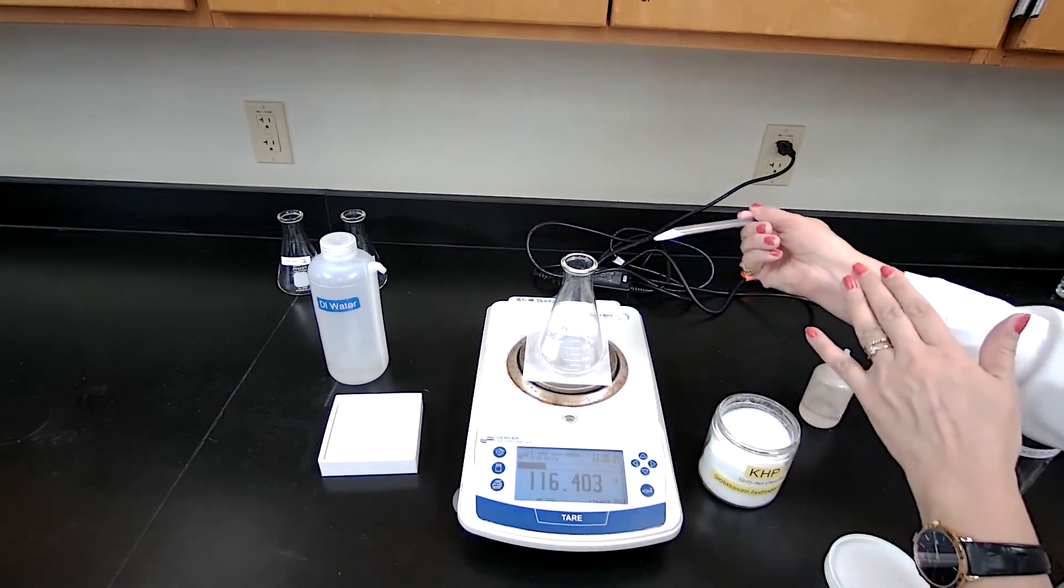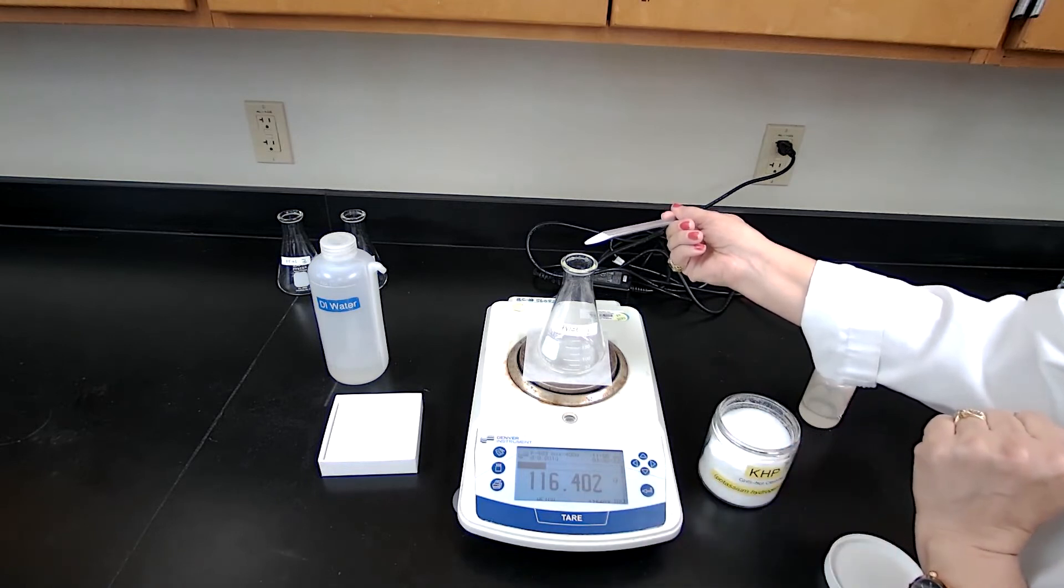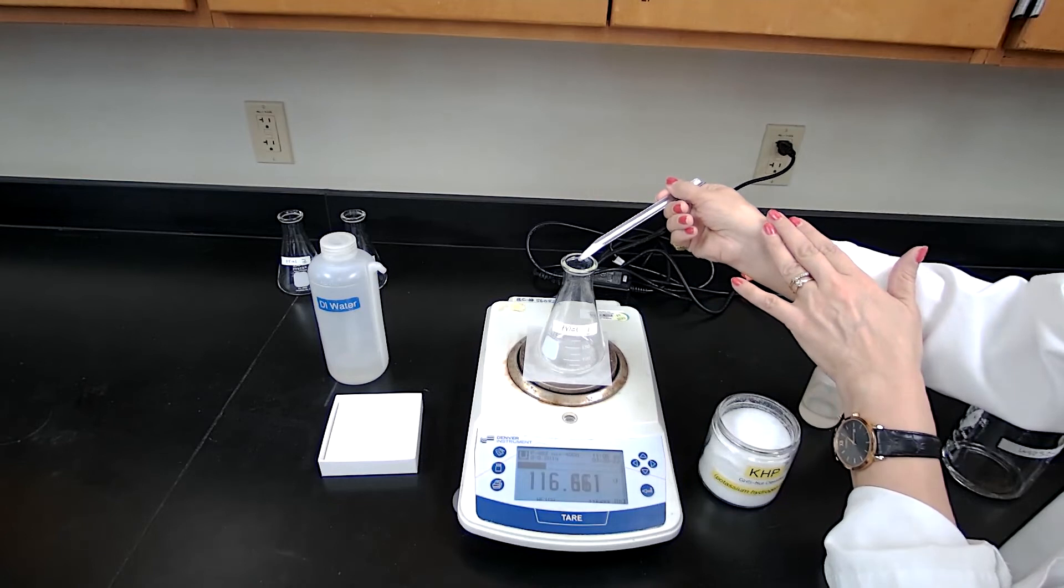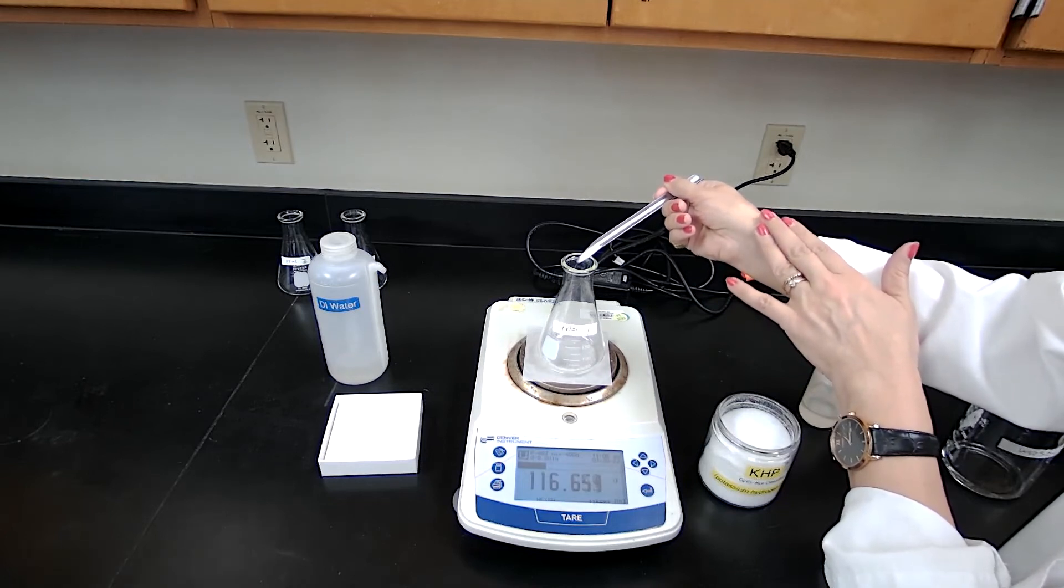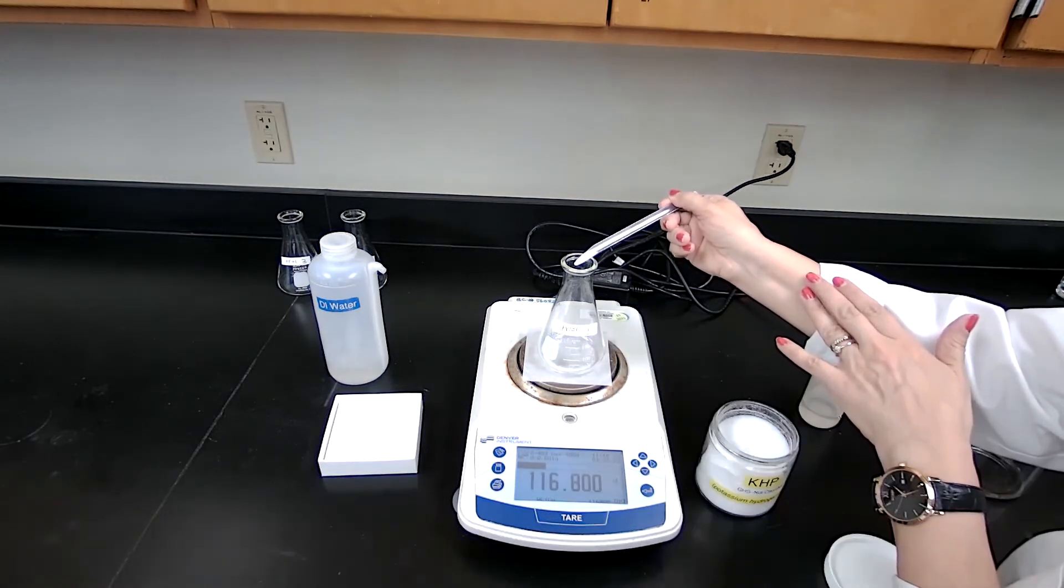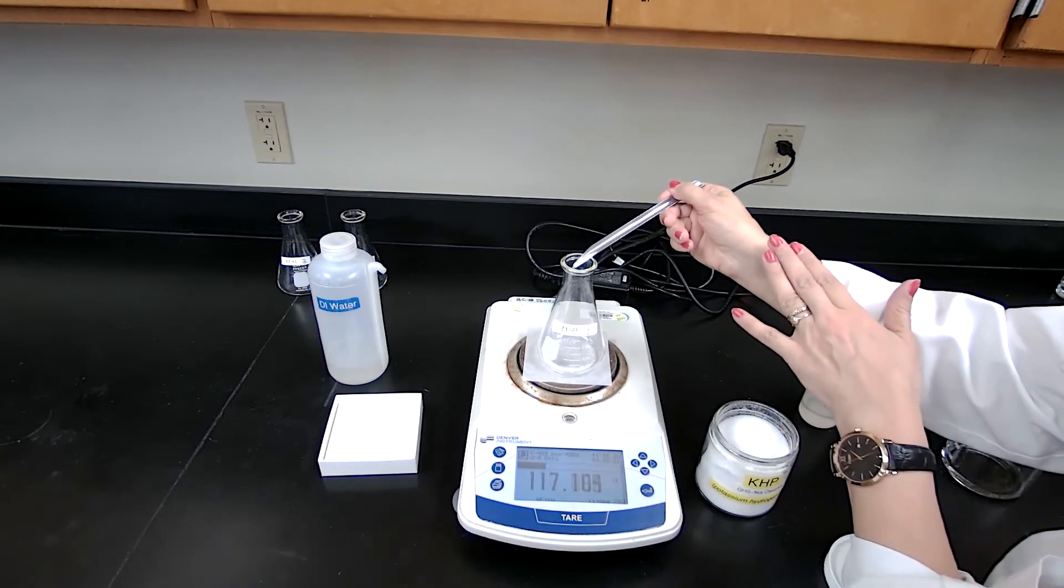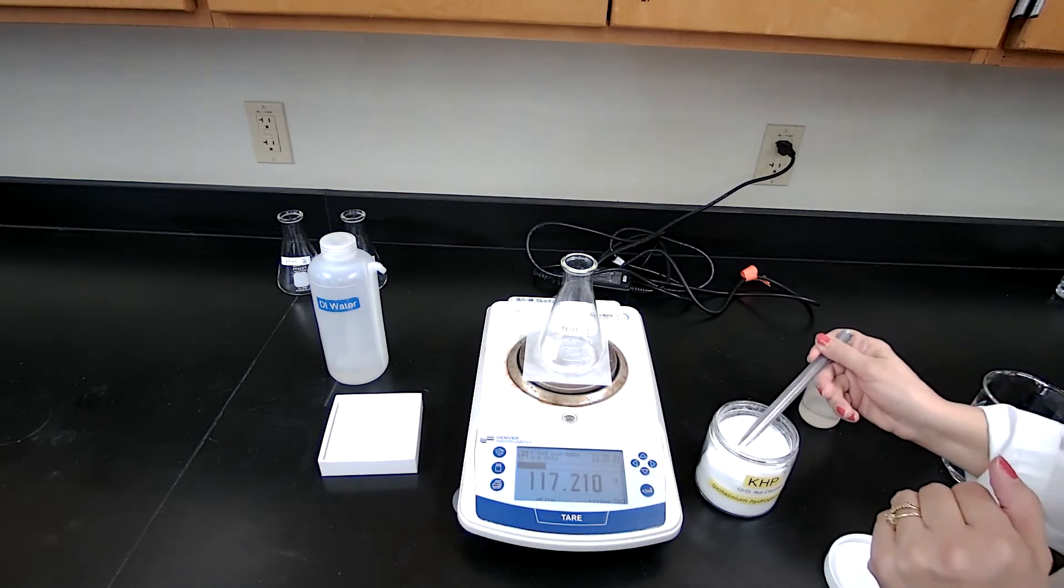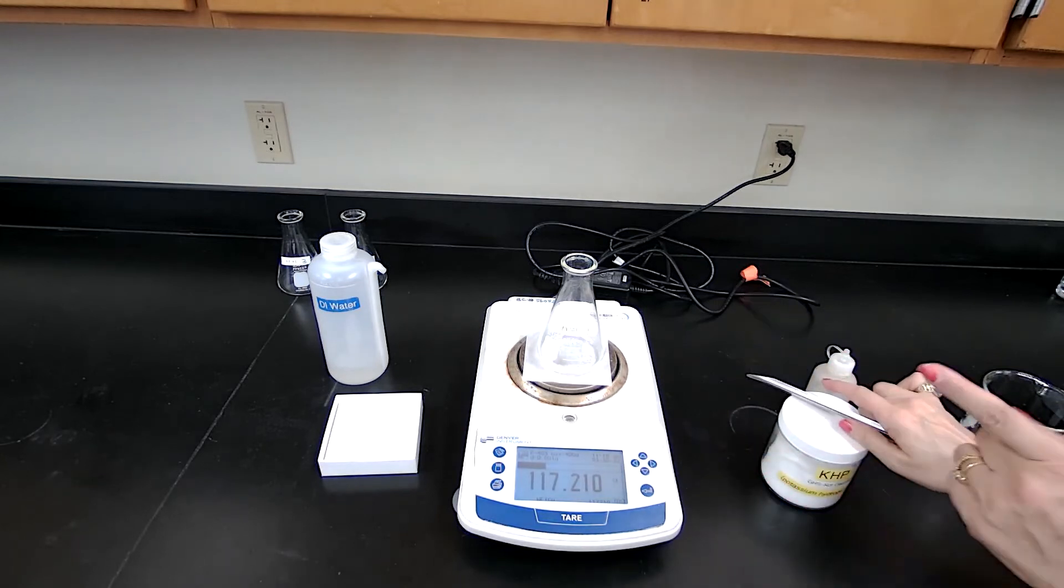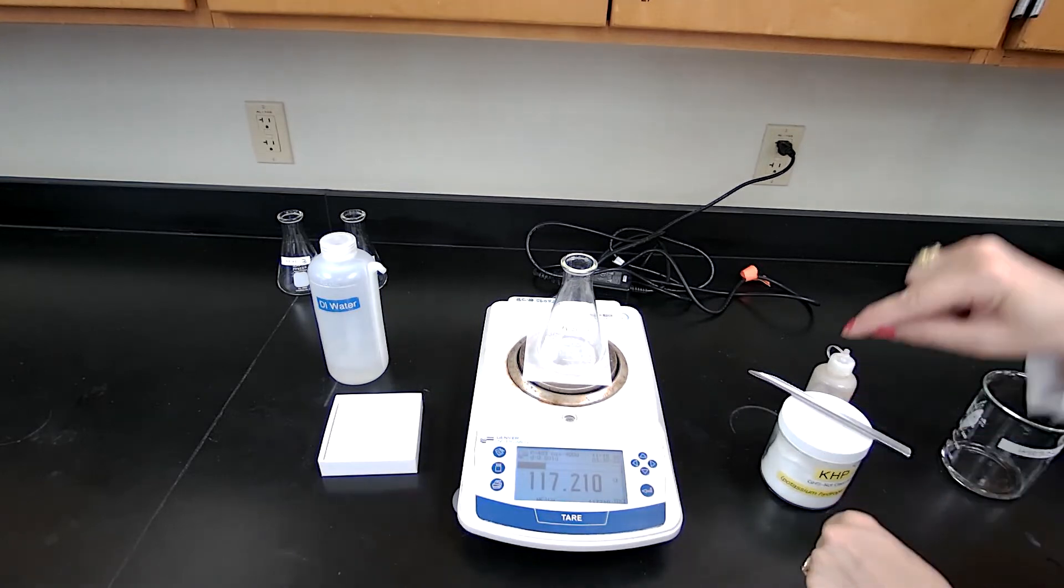Then I need 0.8 gram. So if it's 0.8 gram based on the procedure, we can go anywhere between 0.75 to 0.85. So this should go to 117.2 about that. So I would add slowly. So we are going to add until 117.2 and no more than 0.3. So that's it. Let's record this number as the mass of the flask plus the KHP for trial one. And I hope that you can see it. Right? So that's the first trial one.